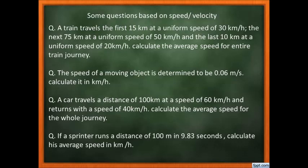Here are some questions based on speed and velocity for you to try. The first question: a train travels the first 15 km at a uniform speed of 30 km/h, the next 75 km at 50 km/h, and the last 10 km at 20 km/h. Calculate the average speed for the entire journey. Find the total distance, compute each time interval, then calculate average speed.